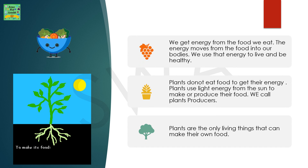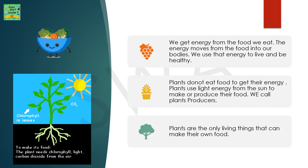We get energy from the food we eat. The energy moves from the food into our bodies. We use that energy to live and be healthy. Plants do not eat food to get their energy. Plants use light energy from the sun to make or produce their food. We call plants producers. Plants are the only living things that can make their own food.